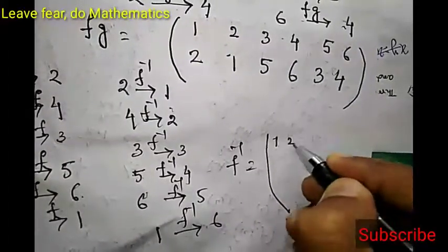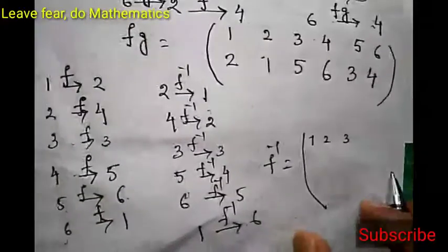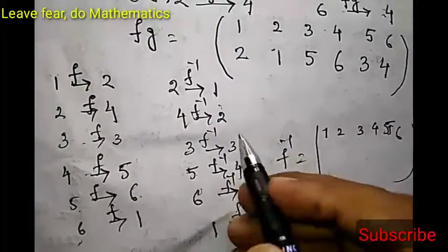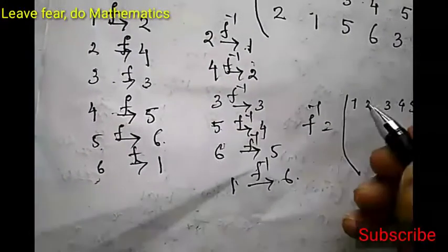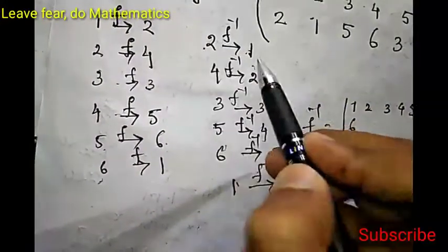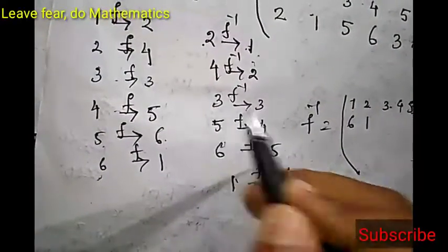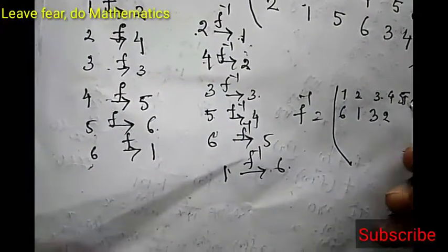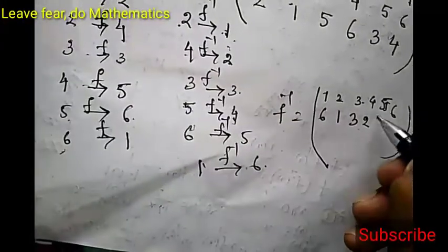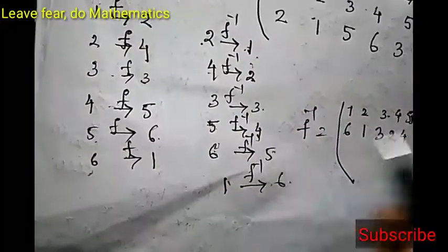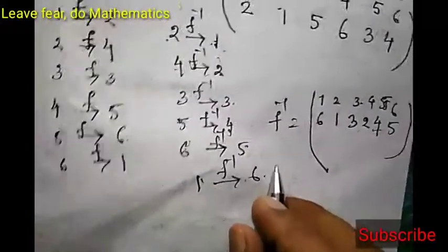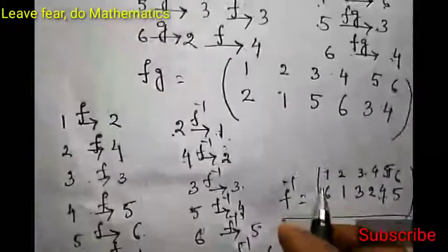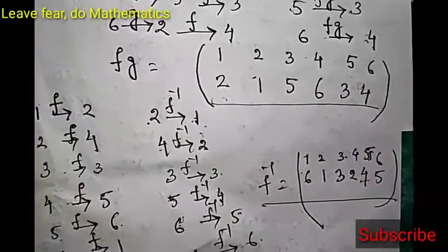So f inverse is: 1 2 3 4 5 6 on top, and 6 1 3 2 4 5 on the bottom. That is: 1 goes to 6, 2 goes to 1, 3 goes to 3, 4 goes to 2, 5 goes to 4, and 6 goes to 5 under f inverse. So this is f inverse and this is our fg. Hope friends you have understood - if you have any queries please let me know in the comment section.